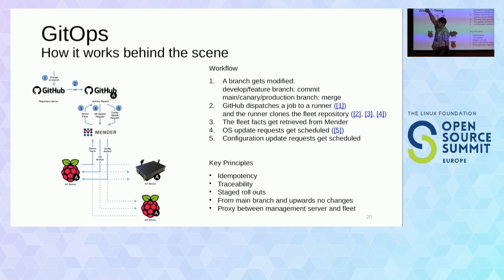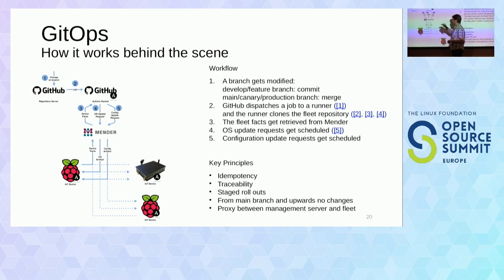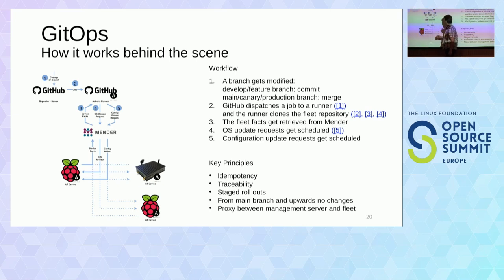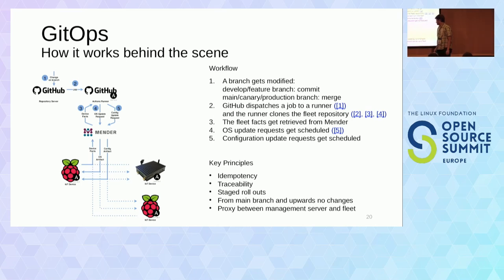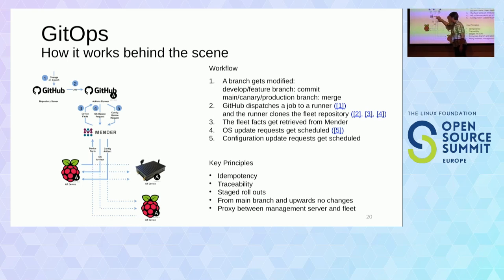How does this work behind the scenes? A commit or merge on a branch triggers a GitHub Actions job on a hosted runner. The Ansible playbook checks fleet facts gathered from Mender — not from devices directly, as they might be offline. It checks whether an OS update is required and dispatches it or not, and whether configuration needs updating. An important difference from a typical server world is that we have Mender as a proxy between management and the fleet — we don't touch devices directly.